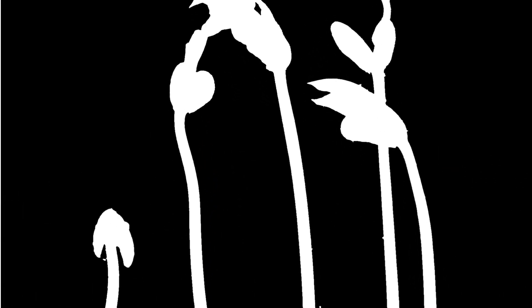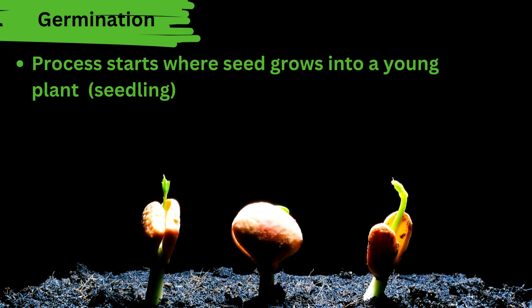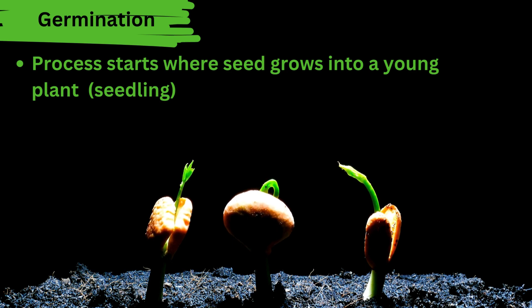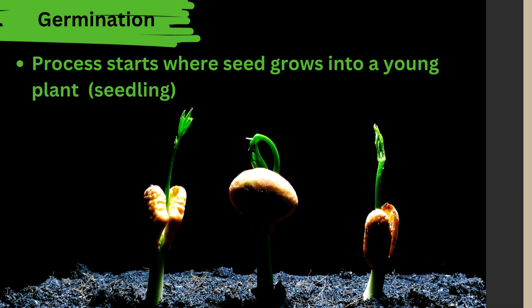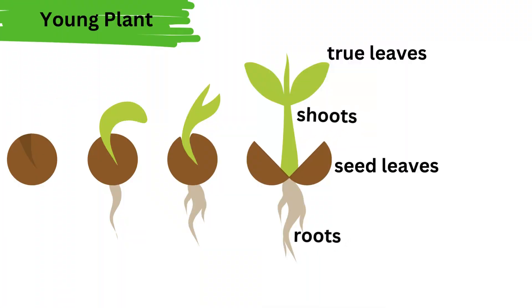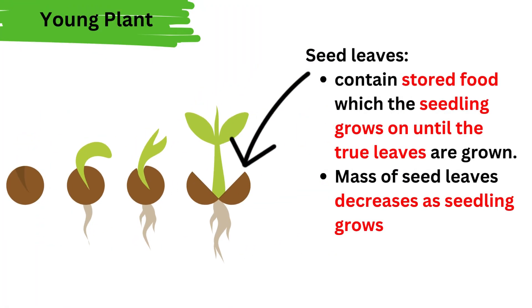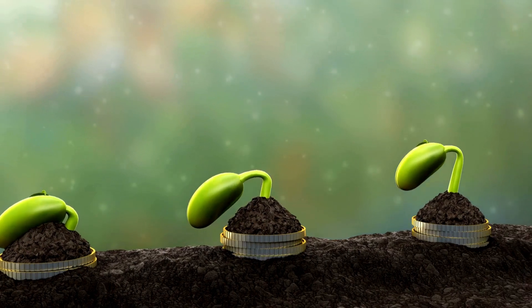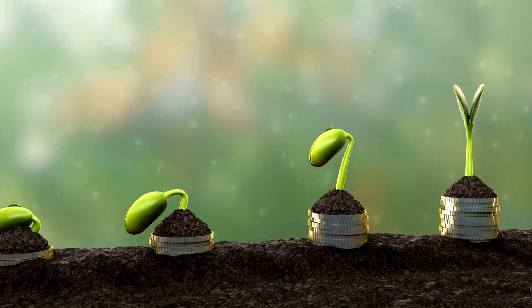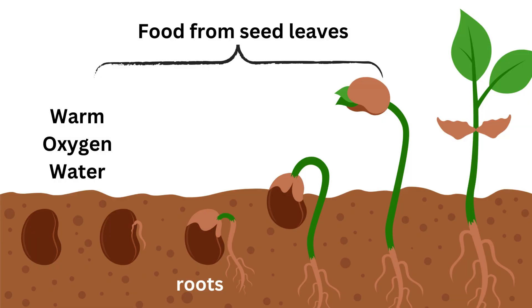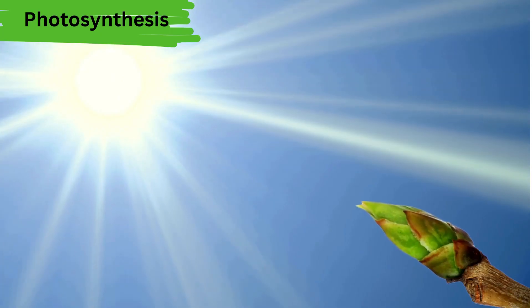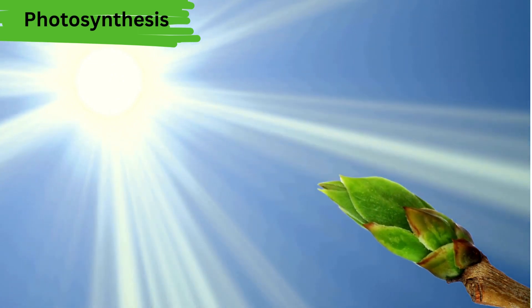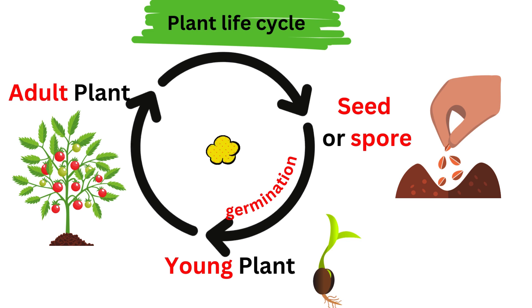The process of germination starts when the seed grows into a young plant — a seedling. A young plant has shoots, roots and a seed leaf. A seed leaf is part of the plant that contains stored food for the seedling to grow. Initially the seed leaf gives the young plant food. With time the true leaves grow, so the plant can make its own food through photosynthesis — using the sun to make food.